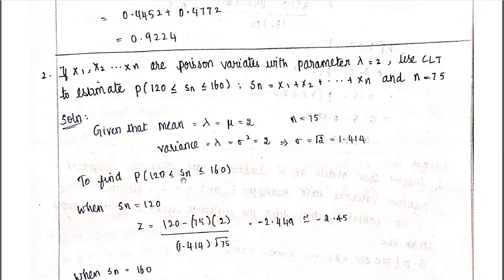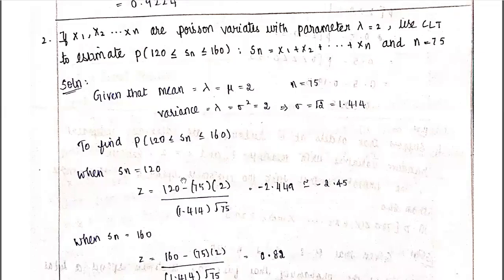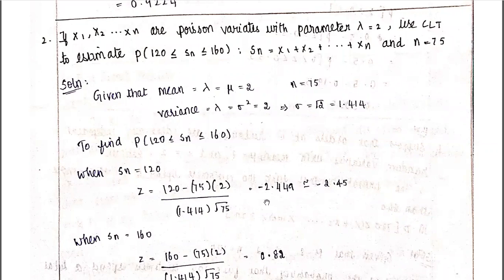Sn is the sum of independent random variables. The Z formula is Z = (Sn − nμ) / (σ√n). Substituting: when Sn = 120, Z = (120 − 75×2) / (1.414 × √75), which gives Z = −2.449.